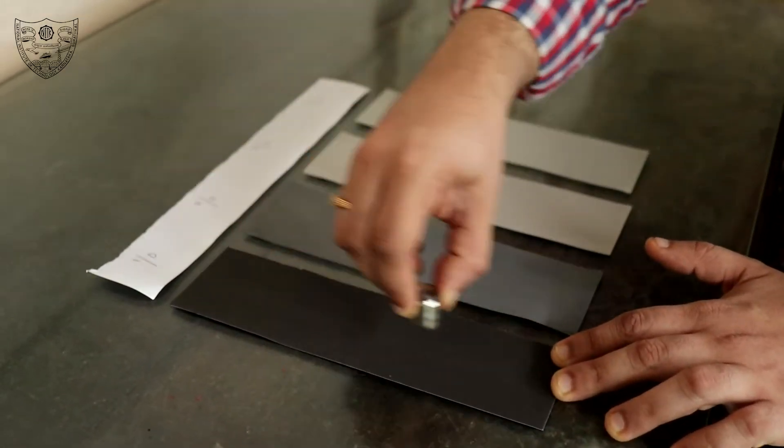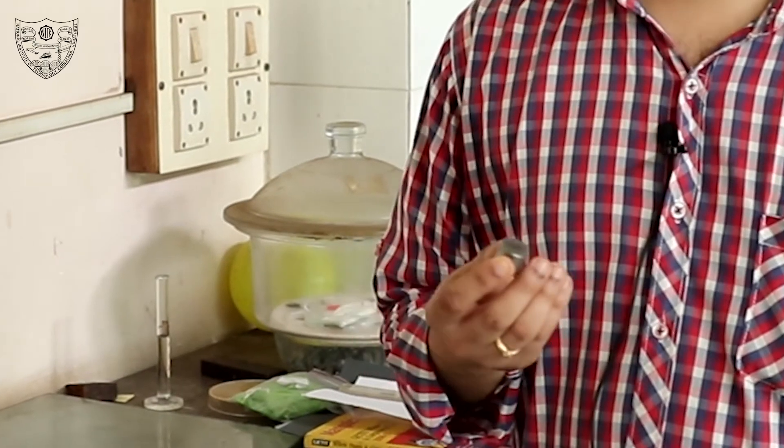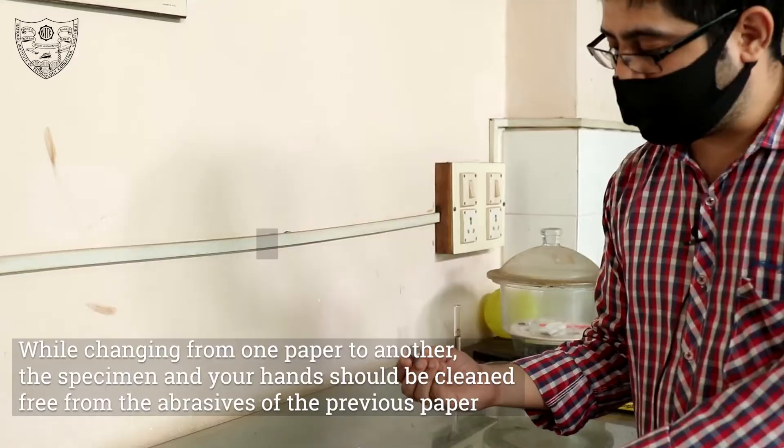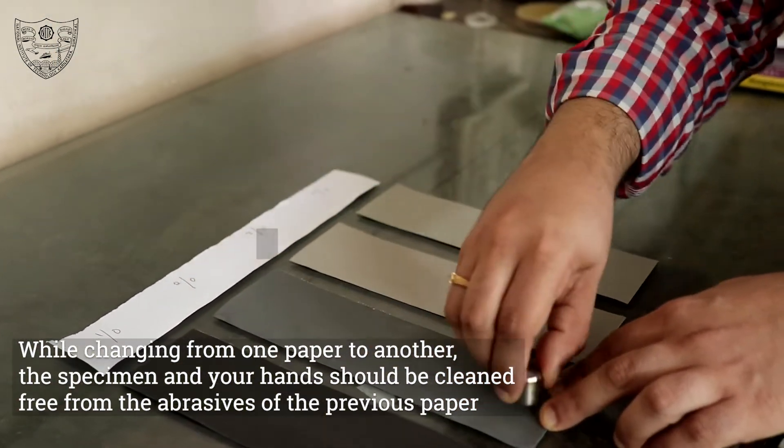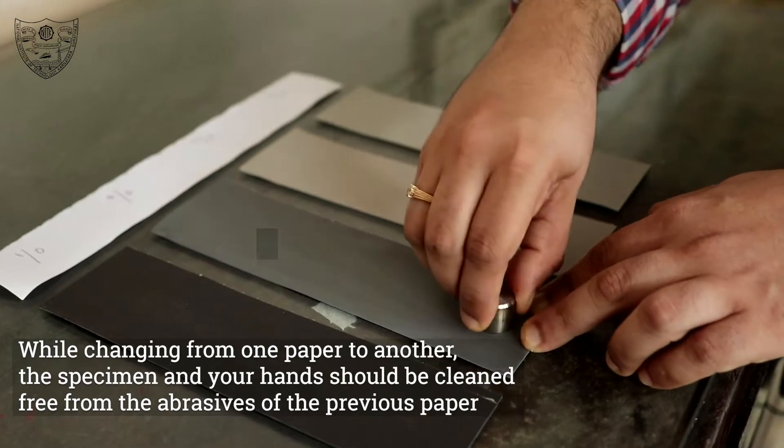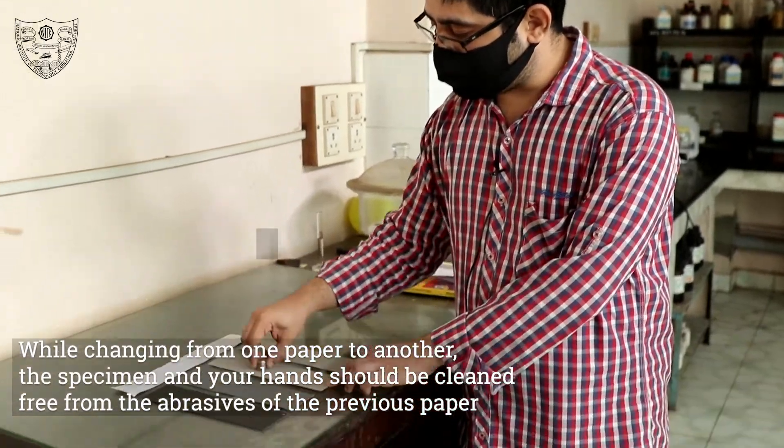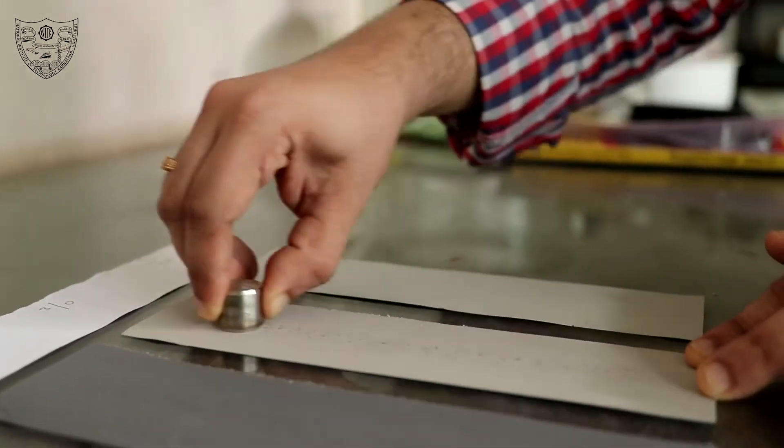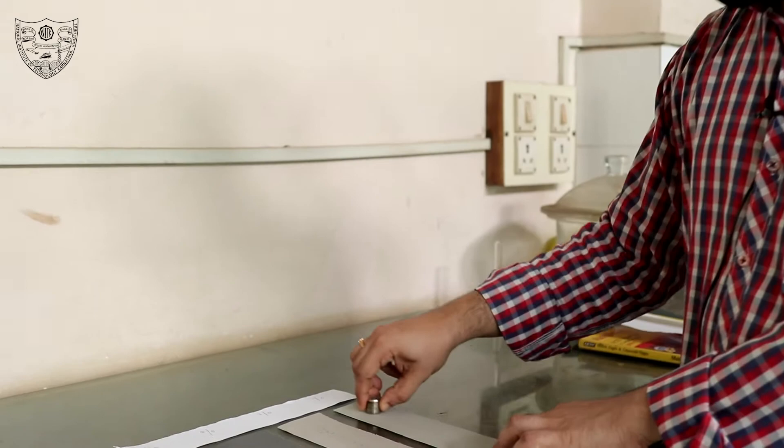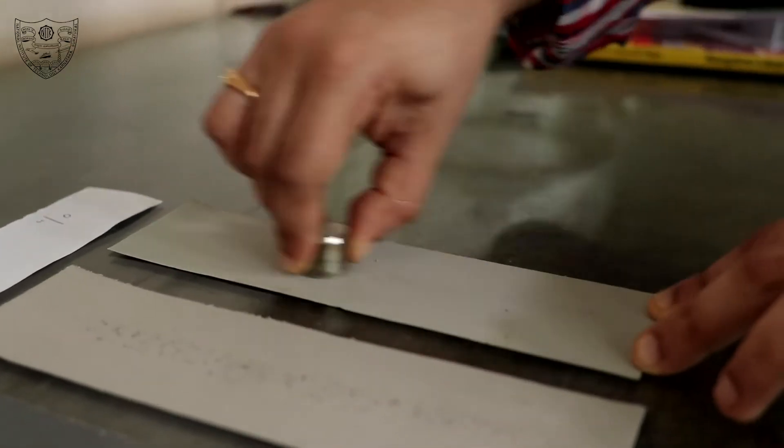After about 5 to 10 minutes, we rotate the sample and polish in a perpendicular direction, and again in the forward direction. We repeat the same exercise for the finer grade 3 bar 0 paper and finish the mechanical polishing on a 4 bar 0 paper.